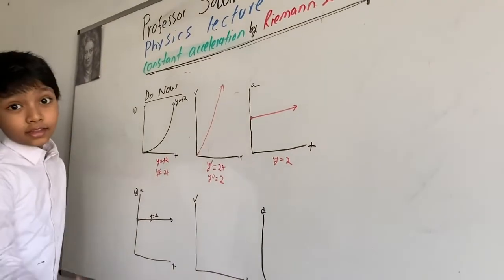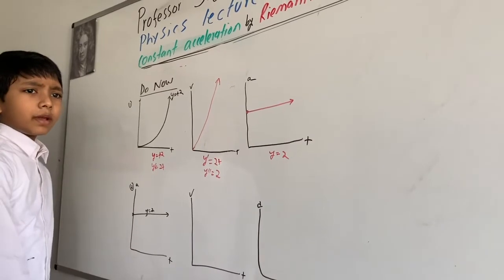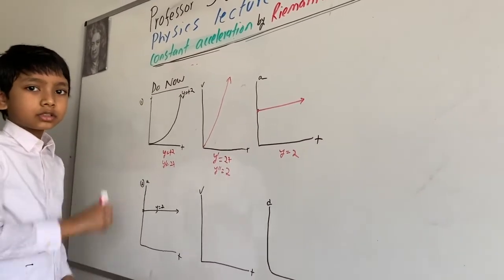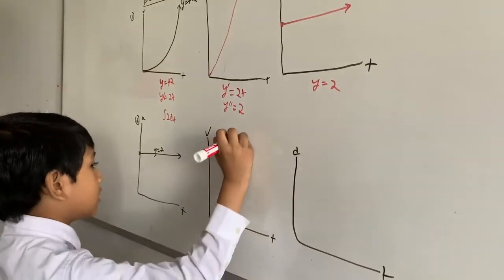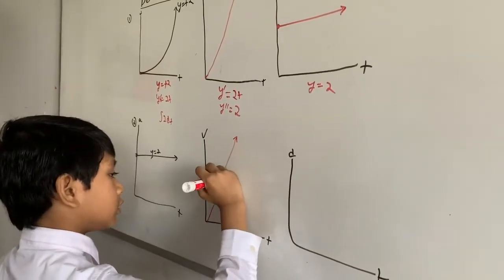Let's take the integral of this. Integrals are basically derivatives backwards. 2 is represented by 2 dt. The label is y equals to 2t.